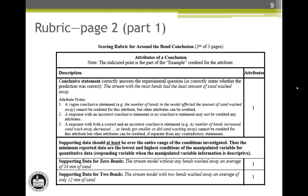The second thing to notice is the bold section in the middle about the supporting data. This is where an understanding of the conditions of the manipulated variable is important. We have to determine if the manipulated variable is expressed as quantitative data or as descriptive data. Since the conditions in this experiment are the numbers 0, 1, and 2, we have quantitative data for this item. As a result, the minimum data that must be reported is the data for 0 bends, the lowest condition, and the data for 2 bends, the highest condition.